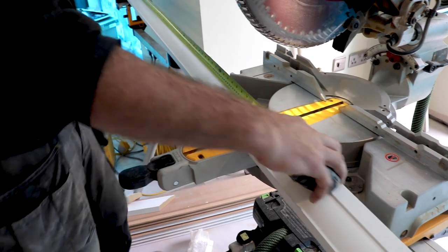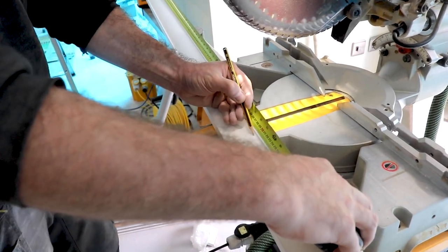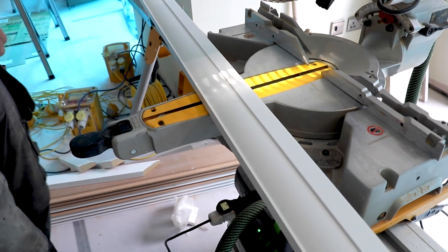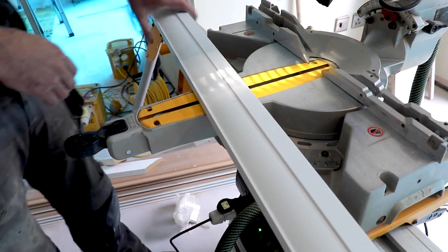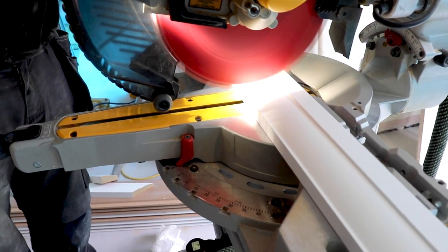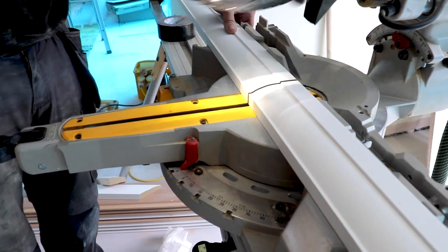We're going to cut the uprights of our architrave down to just over 2m. This is because the standard height of door frames is typically 1981mm and we want to have a piece of architrave that is slightly oversized so that we can mark it up against our door frame markings without hitting or damaging the ceiling.